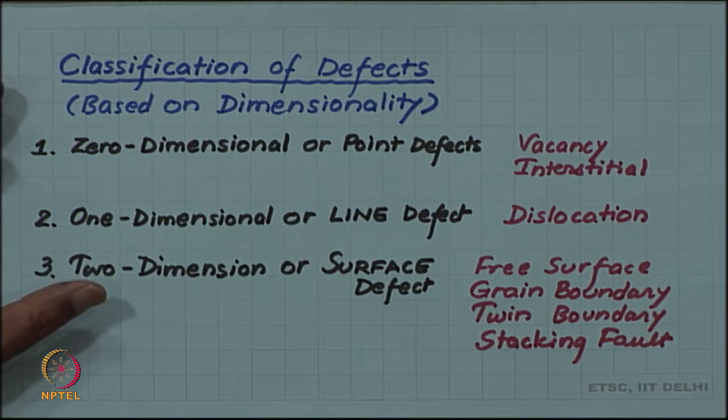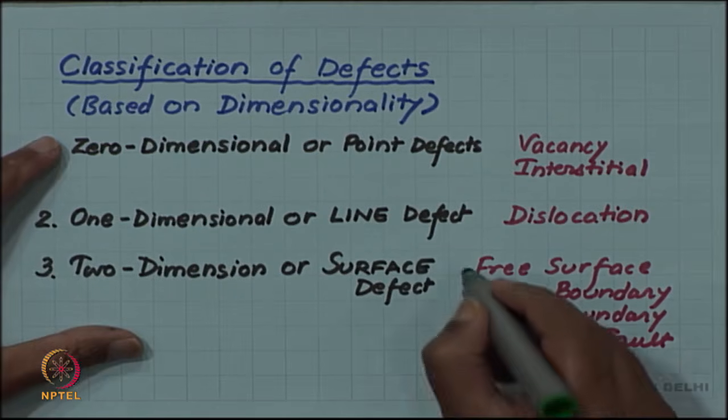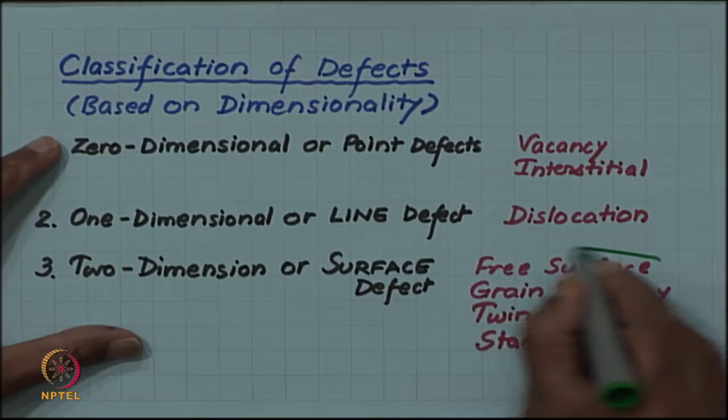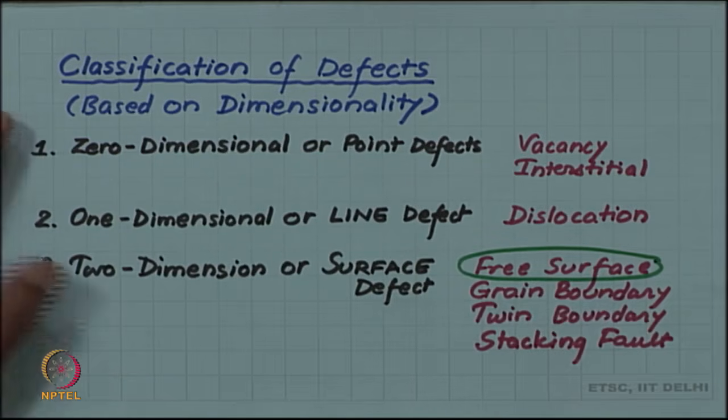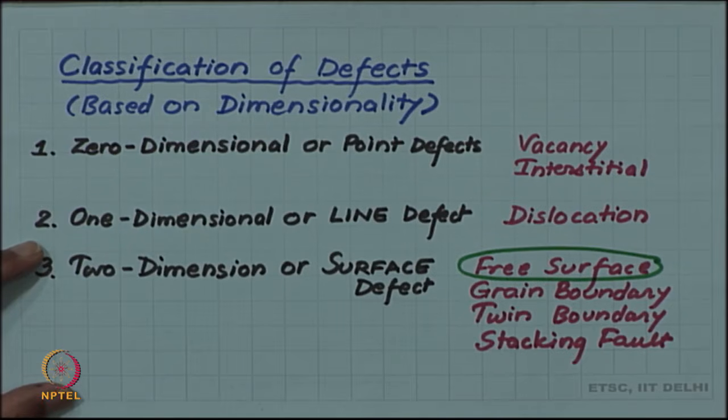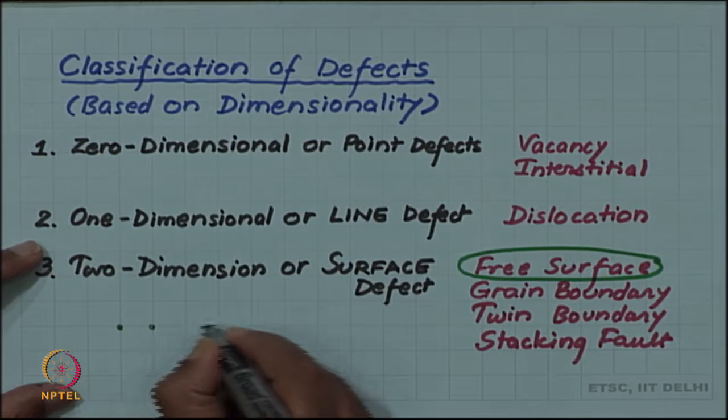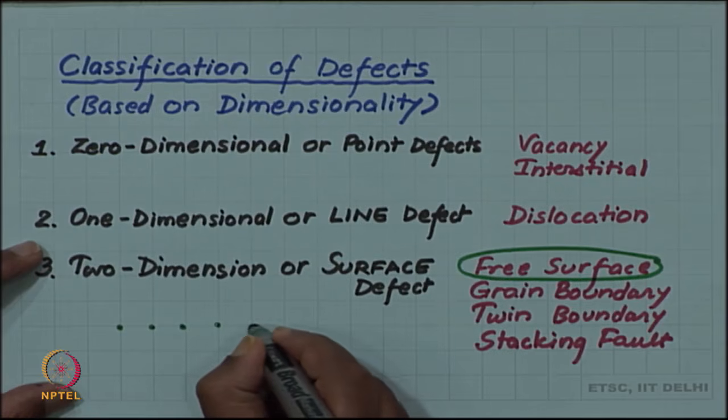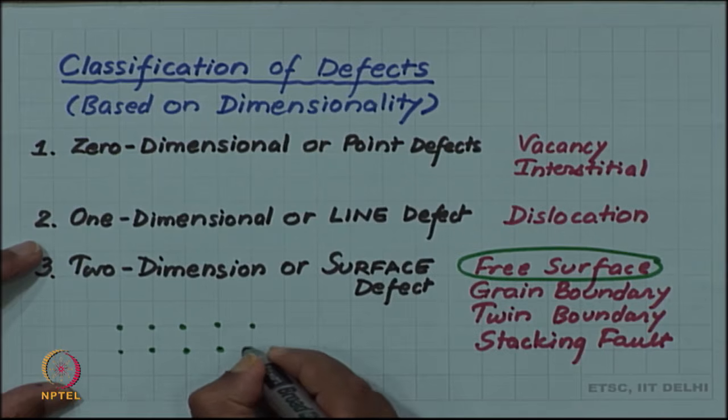One may think that why the crystals are not ideal, why do they have defects. First of all, one defect, this free surface, will always be present in the crystal because our crystals are finite. And the definition of periodicity requires an infinite crystal, since all lattice points have to be identical, there cannot be any surface.